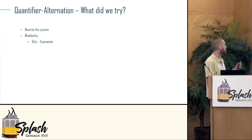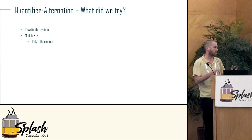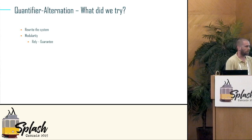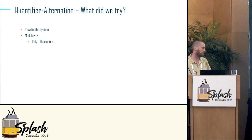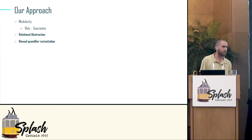In decidable logic, we said maybe we're not smart enough — maybe we can write our model in a way that the cycle doesn't exist. And sometimes you can. We also tried modularity: break the system into several pieces, and hopefully every piece is in a decidable fragment. But sometimes that's not enough. In this work, we add relational abstraction, and when that doesn't help, we use manual instantiations.